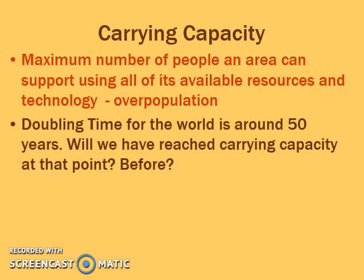Those are still things to consider, especially when we look at carrying capacity — the maximum number of people an area can support in terms of population with the resources and technology it needs. If you have overpopulation, then you have sort of exhausted your carrying capacity. At the rate we're doubling right now with the rate of natural increase, the doubling time for the world is around 50 to 58 years. The question is: do you think we're going to reach carrying capacity at that point or before it? What is the carrying capacity of the Earth in terms of being able to take care of the majority of people on this planet?